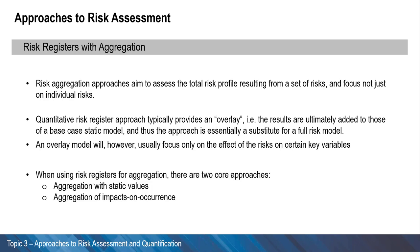When using risk registers for aggregation, there are two core approaches. First, aggregation of static values, which is typically the product of probability and impact; and second, aggregation of impacts on occurrence, where the occurrence is modeled as a risk event and the impact may either be a static value or an uncertain one.